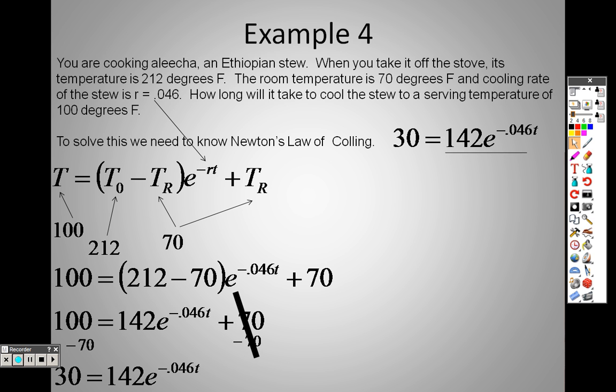Well, that means I need to divide both sides by 142, because remember I said you need to get E all by itself. So when I divide both sides by 142, I end up with 0.2113 equals E to the negative 0.046.